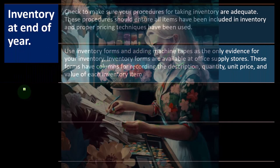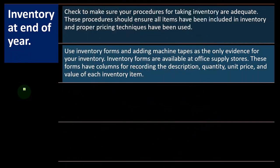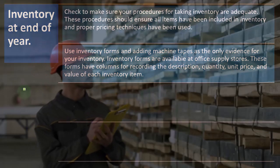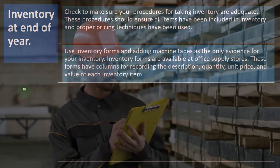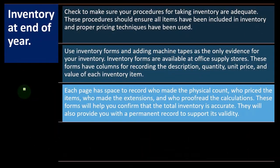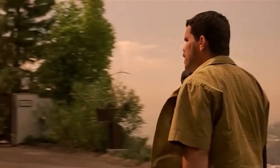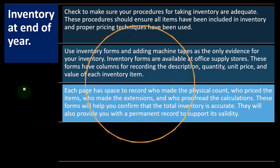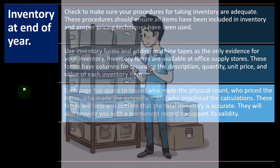Use inventory forms and adding machine tapes as the primary evidence for your inventory. Inventory forms are available at office supply stores. These forms have columns for recording the description, quantity, unit price, and value of inventory items, so you can track your inventory. You might use different methods of inventory tracking: first in first out, last in first out, weighted average, or specific identification.